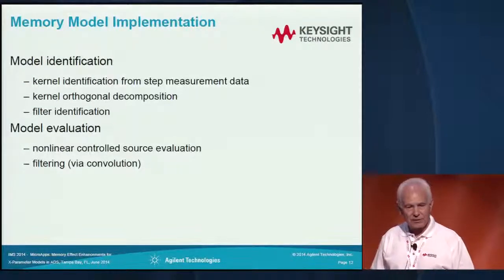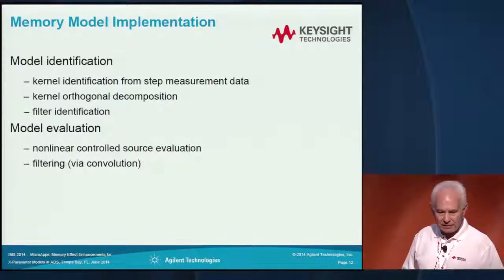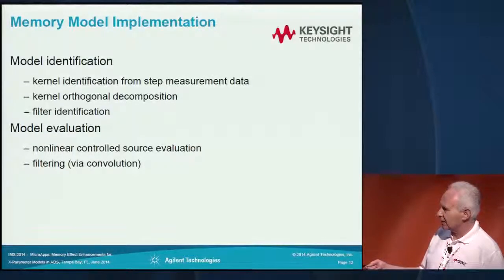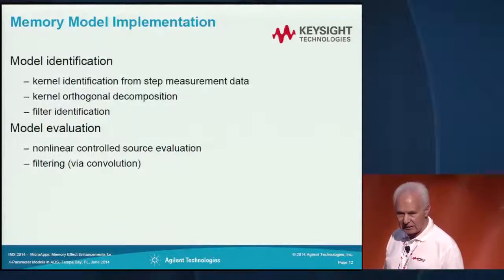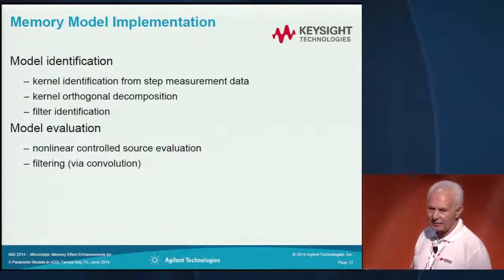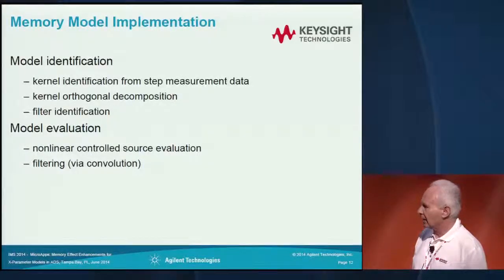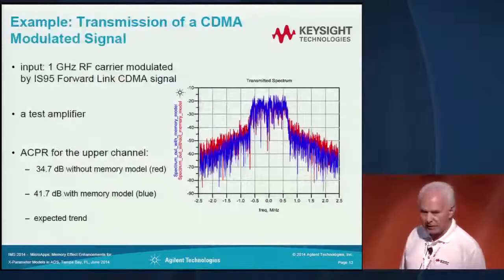The model implementation consists of two phases. One is model identification, and the second is model evaluation. In the model identification phase, we first identify the kernel from the measurement data, then perform orthogonal decomposition of the kernel and identify the filtering characteristics. During model evaluation, the nonlinear controlled sources are evaluated in the static sense, and filtering with convolution provides the handling of the history.